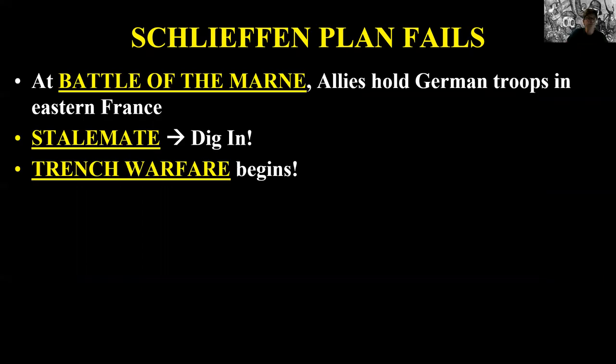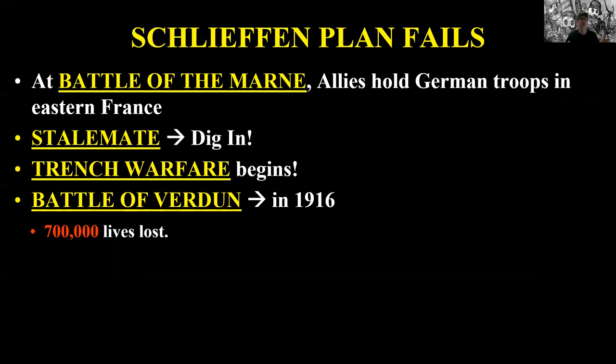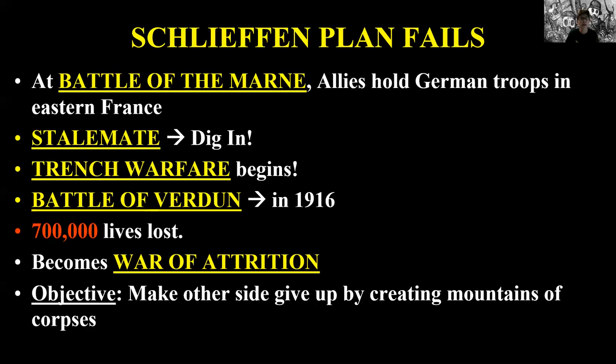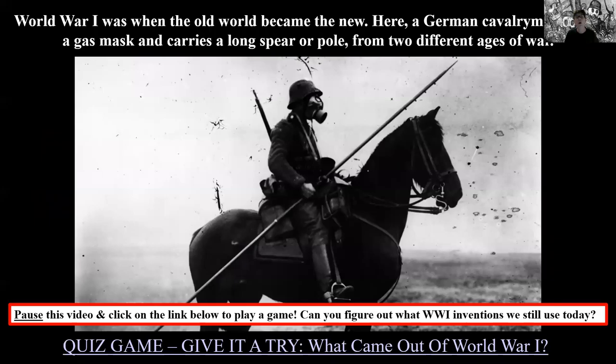The Schlieffen Plan fails in World War I at the Battle of the Marne — it's a stalemate, like in chess where nobody can make a move. So they resort to trench warfare. The war now becomes not about taking territory because you're just going back and forth. At the Battle of Verdun, you have over 700,000 lives lost. This is where World War I changes: it's not about territory anymore because nobody's getting anywhere.